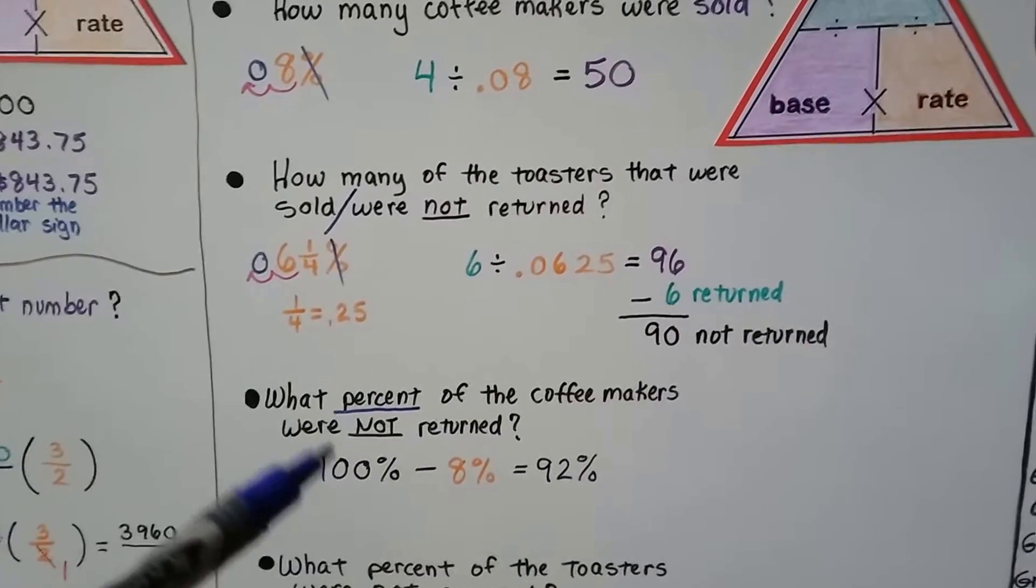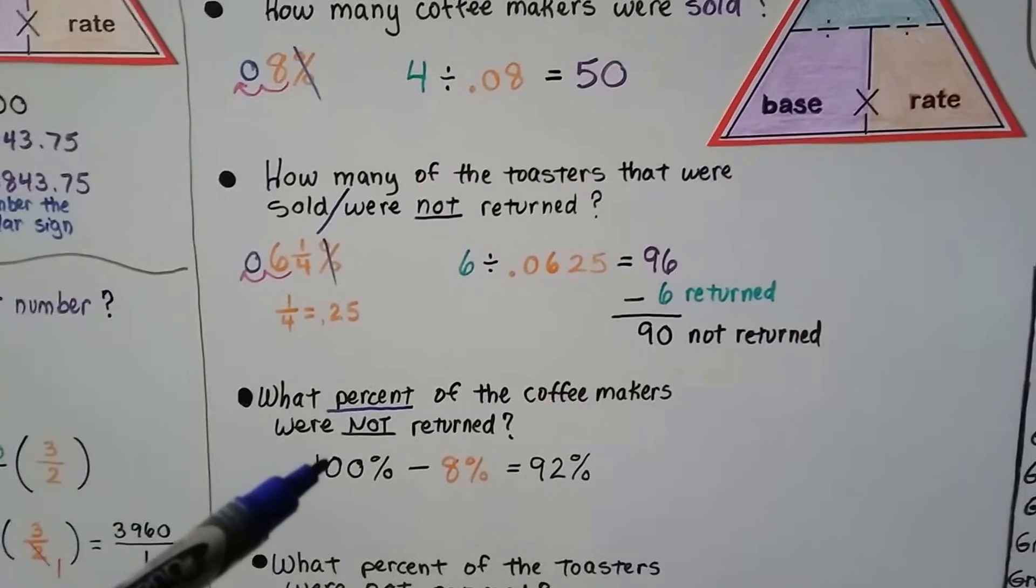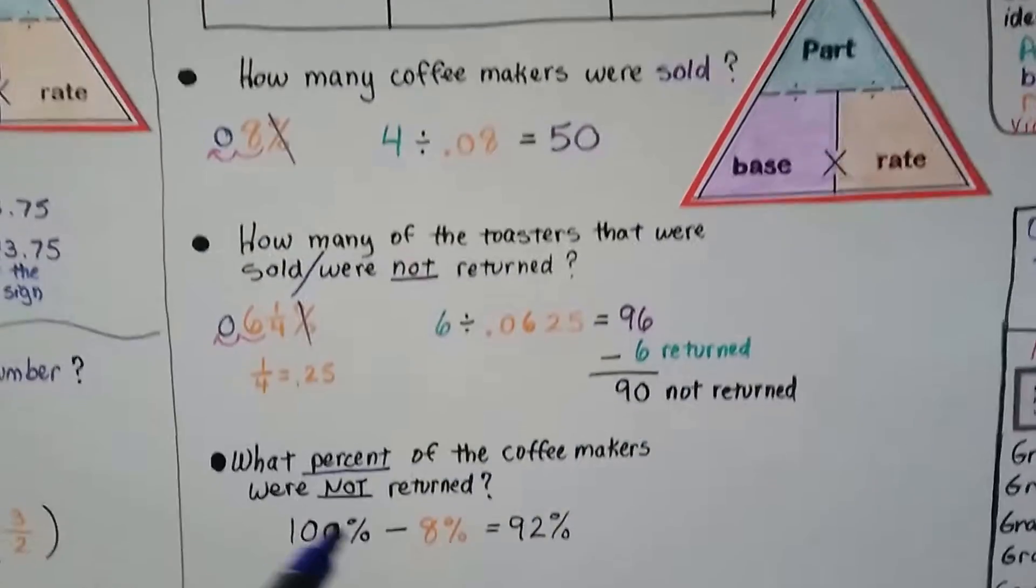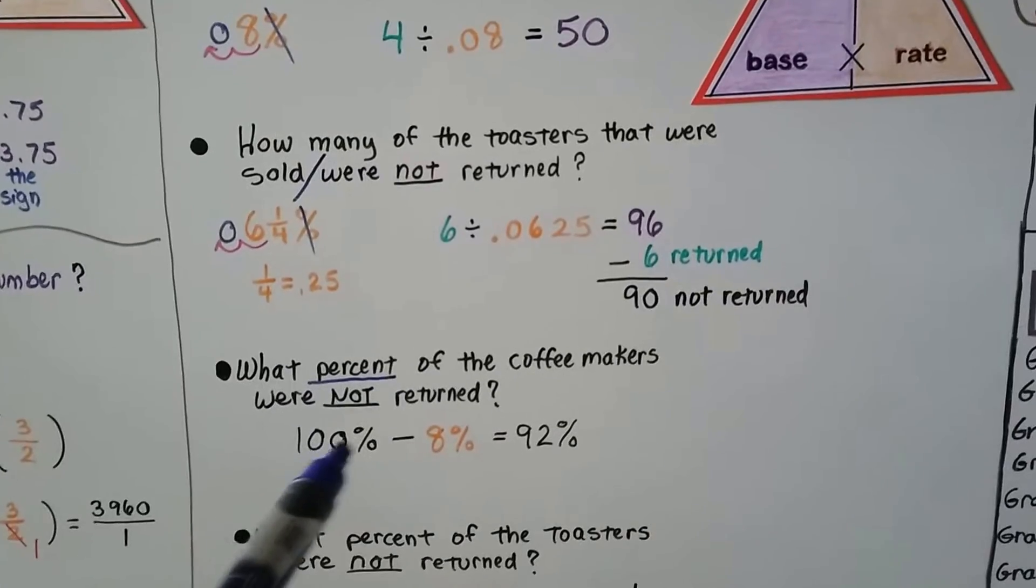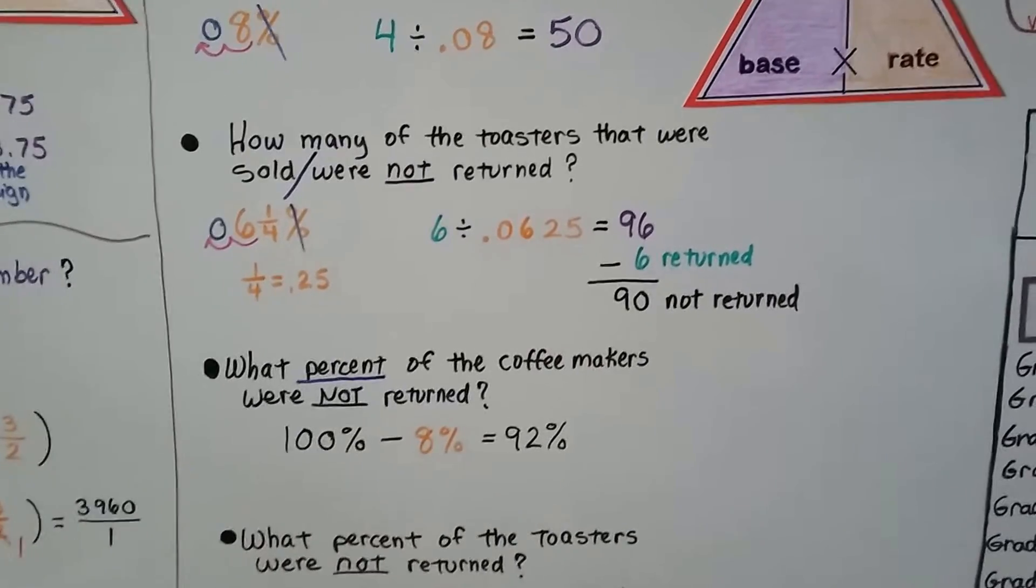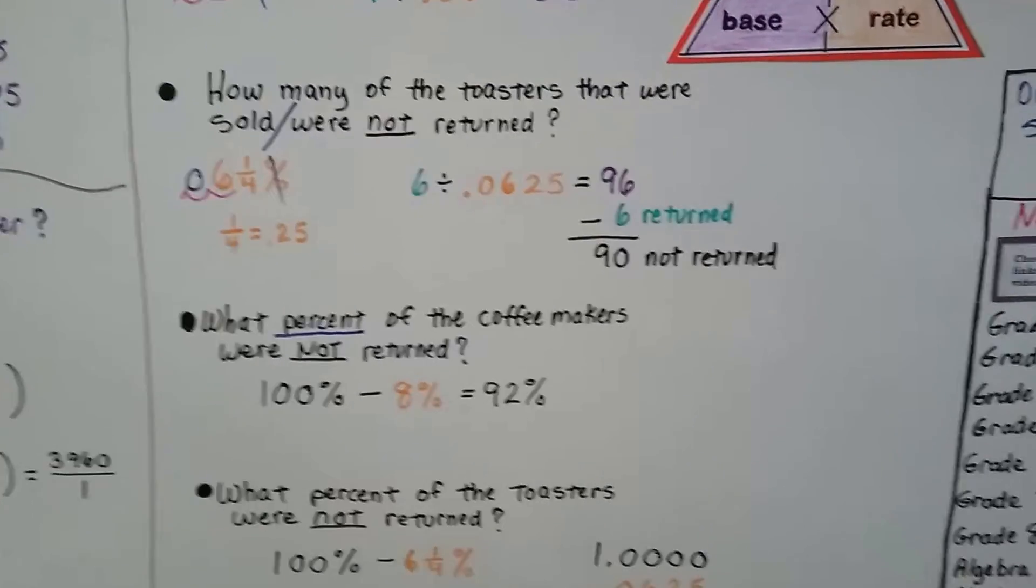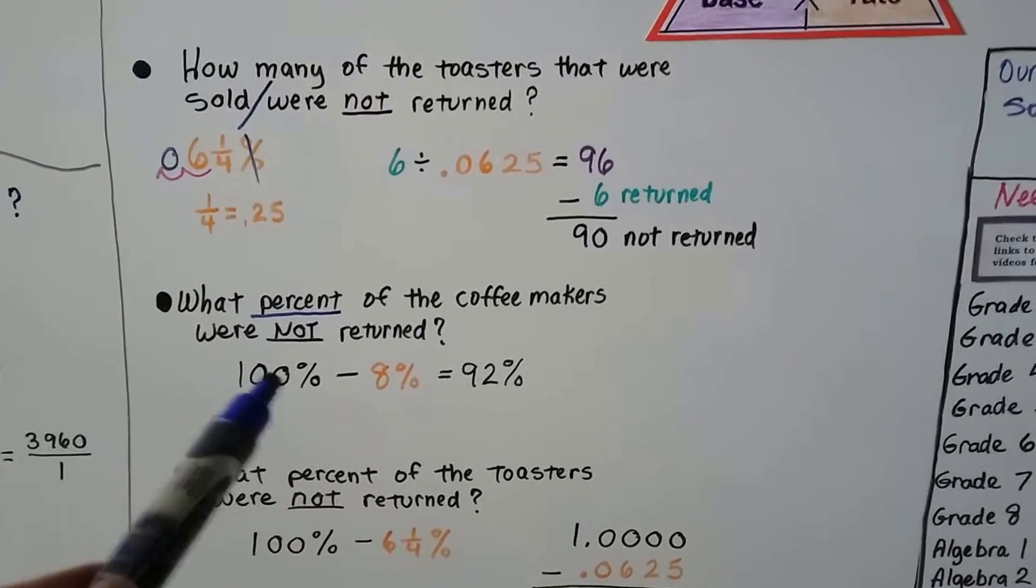If we look at 100% as all the coffee makers sold, 8% were returned, we just subtract the 8% from the 100%. That's 92%. It's a lot easier than it really looks, isn't it? We're just taking the 8% away from the 100% that were sold.